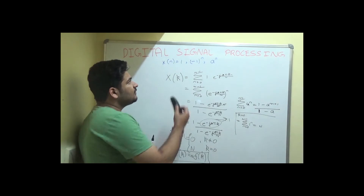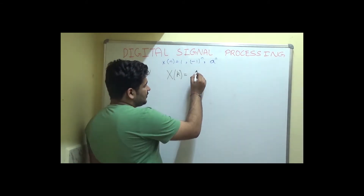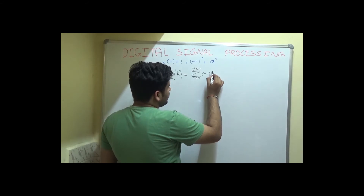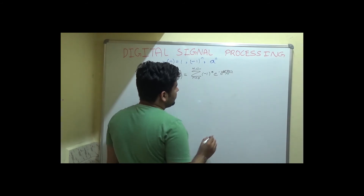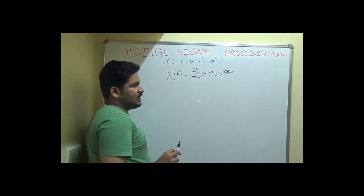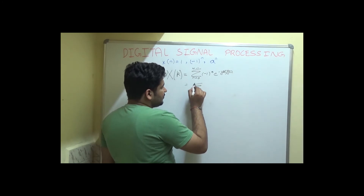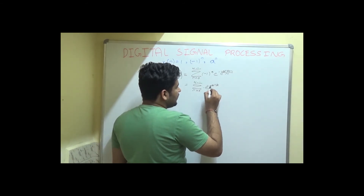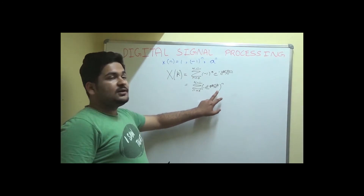Now let us find the DFT of minus 1 raised to the power n. X(k) equals the summation for n from 0 to N minus 1 of minus 1 raised to the power n, times e raised to the power minus j 2 pi k n divided by N. Here, n is the common power for both minus 1 and the exponential, so I group them: the summation of e raised to the power minus j 2 pi k divided by N, times minus 1, all raised to the power n.